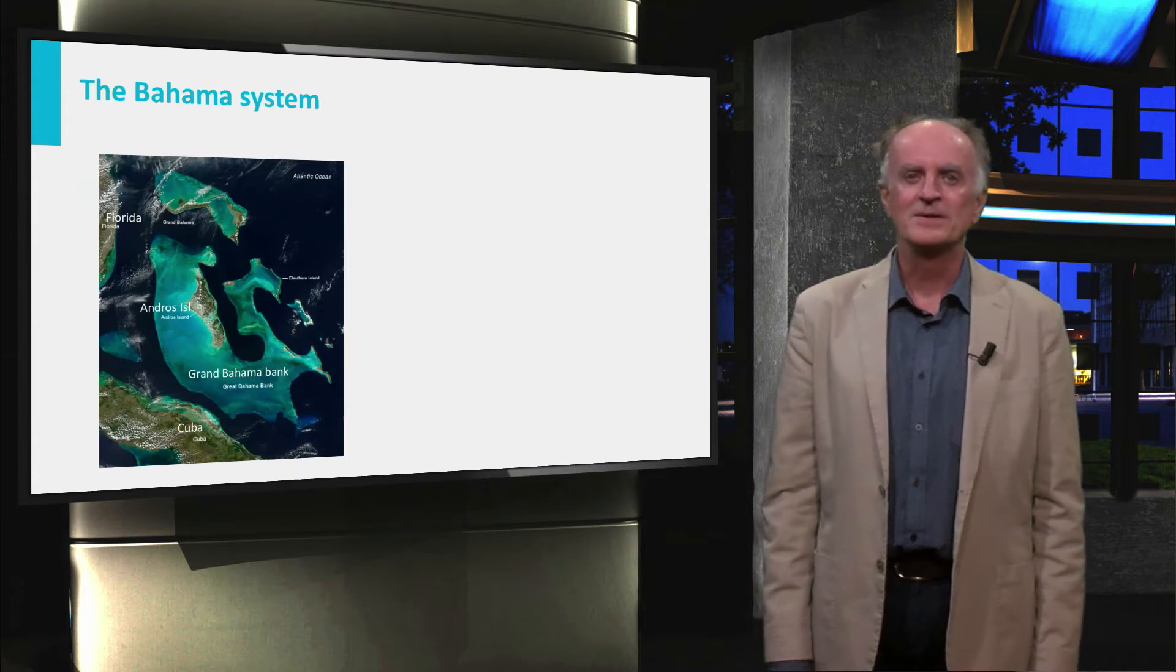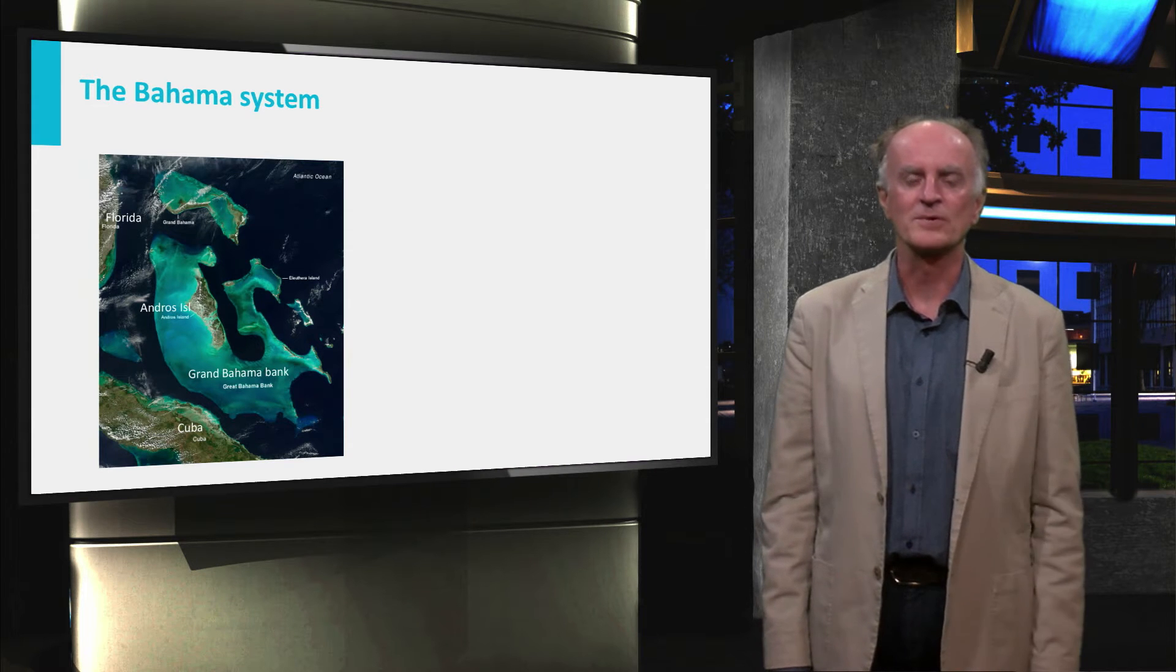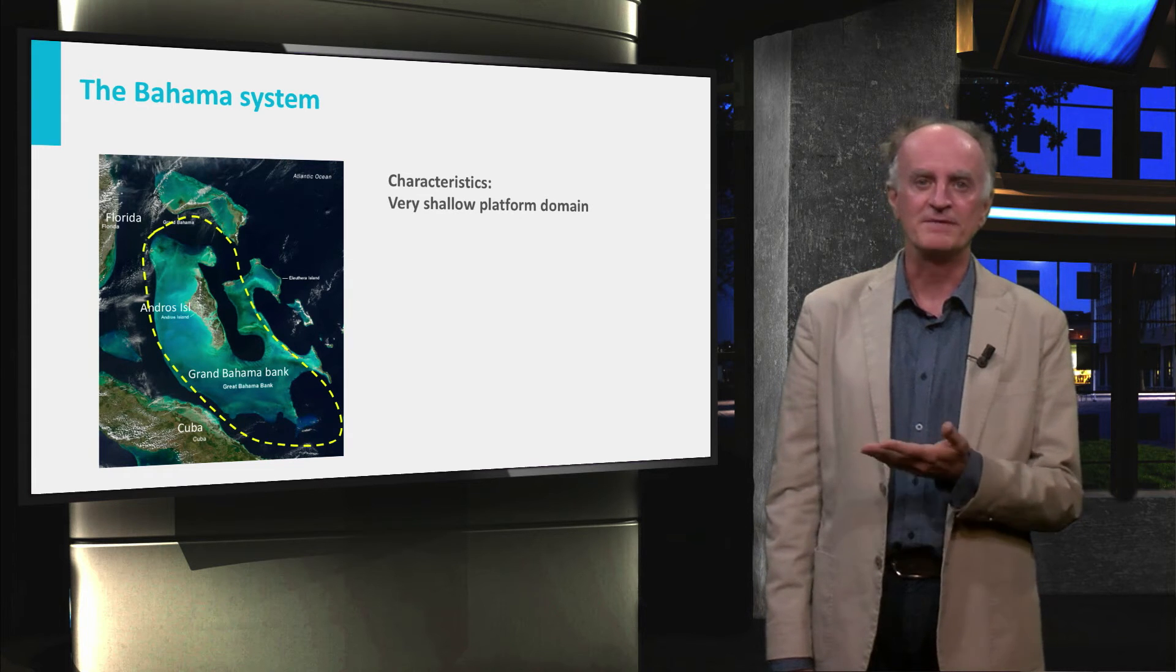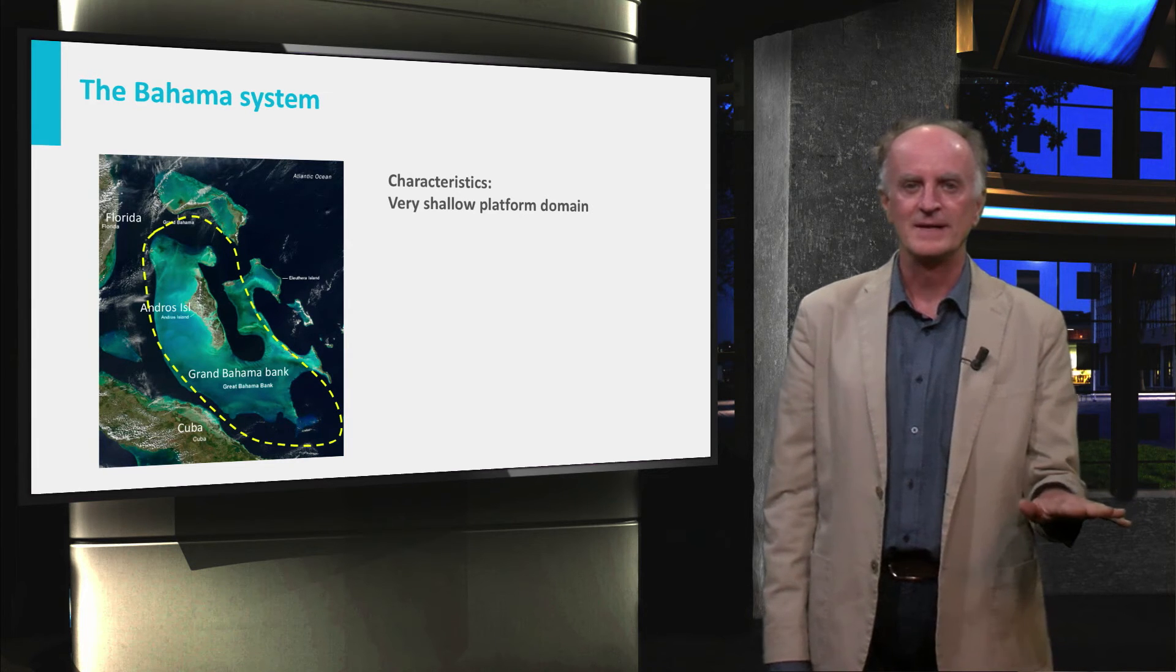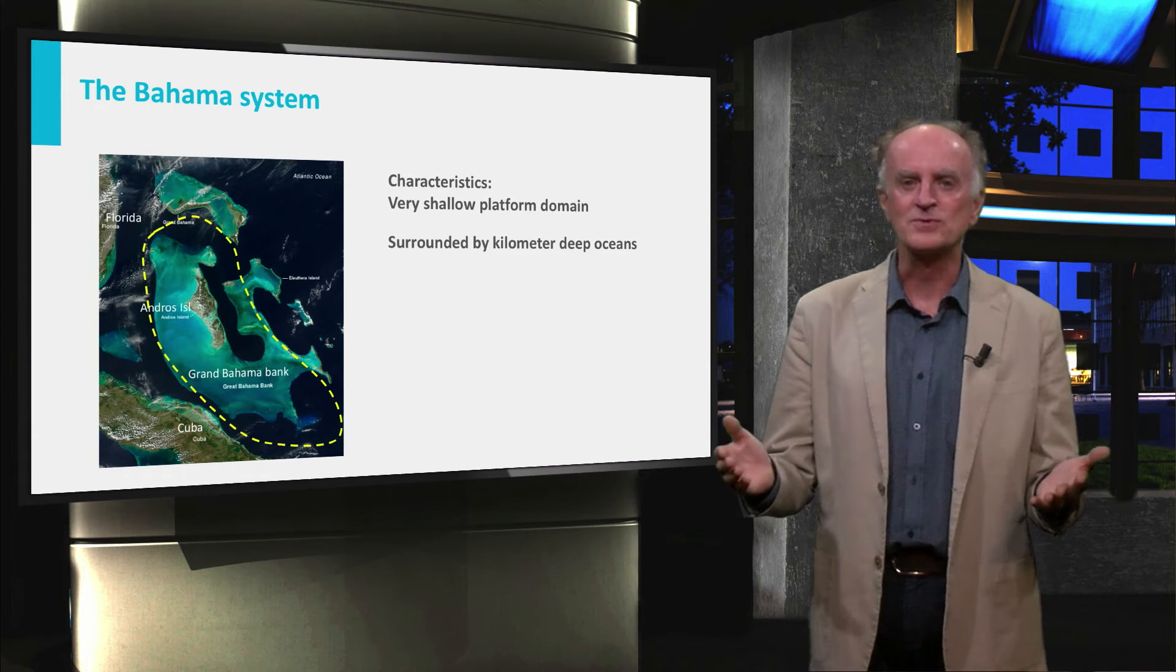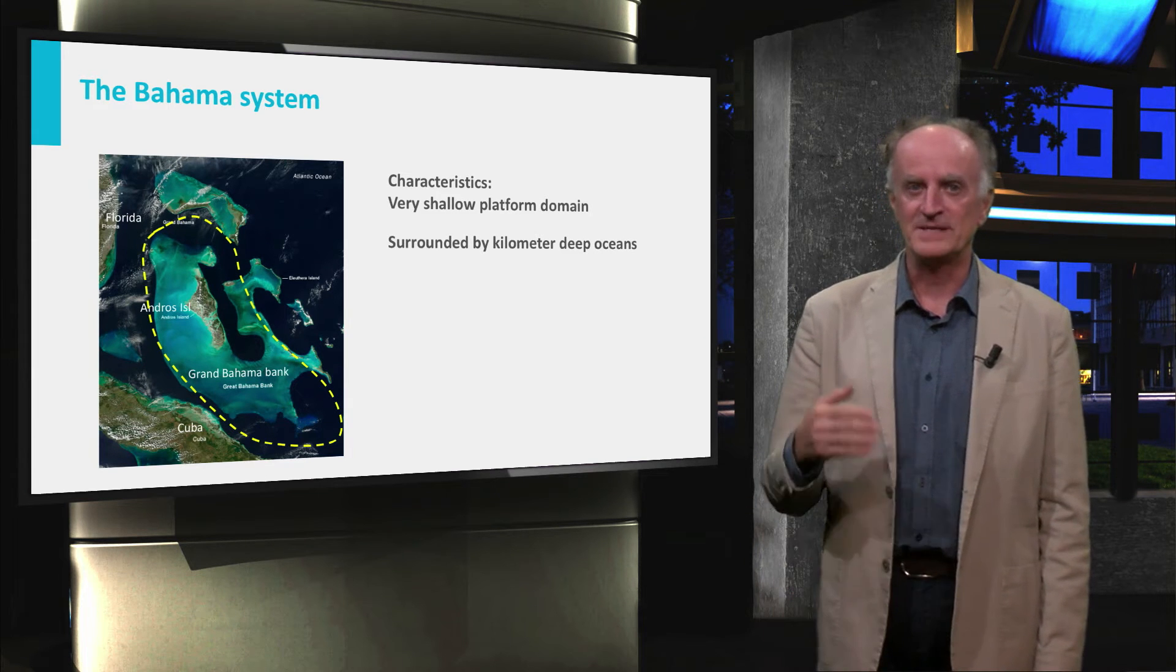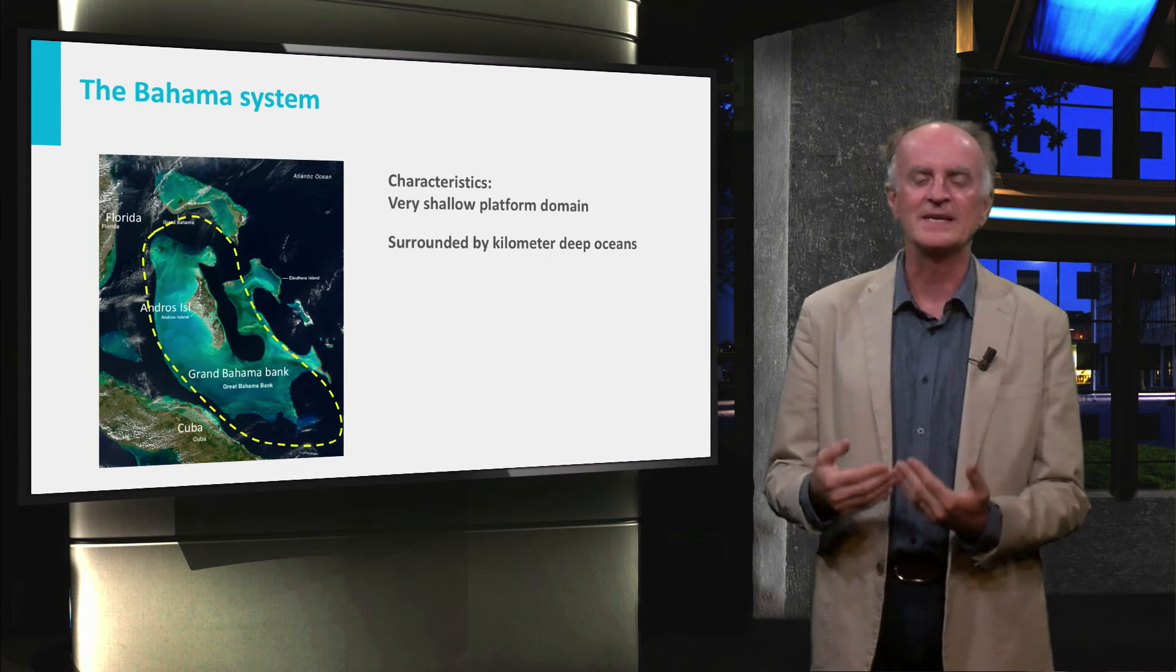In the slide, you see a satellite image of one of the most famous rim platform carbonates of the world, the Bahamas. In the platform domains, the light colors in the image, water depths are very shallow, up to a few meters, and very constant over large regions. The platform is surrounded by domains where the ocean can be up to two, three or four kilometers deep. These are the dark blue regions in the slide. The proximity of shallow and deep domains is very different from what we have seen in carbonate ramps.